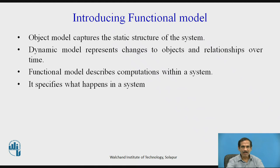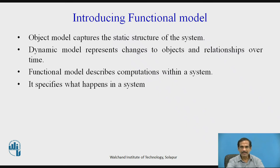To introduce our functional model: the object model captures the static structure of the system, and the dynamic model represents the changes to objects and relations over time. Now, our functional model describes the computations within a system — what are the things to be done to achieve a particular goal, in the form of functions, represented in a functional model. It specifies what actually happens in the system.